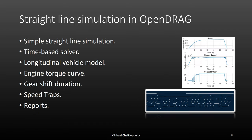For straight line simulations, you're going to be using Open Drag. It's a time-based solver that only includes longitudinal dynamics and doesn't include weight transfer, but you're going to be able to see the engine torque curve effect on performance, gear shift duration, and you can set speed traps — all of which will be included in the automatically generated reports.